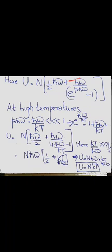This result is not in agreement with the equipartition theorem. According to the equipartition theorem, the mean energy per harmonic oscillator should equal kT. However, the quantum mechanical result contains additional terms beyond kT, making it clear that quantum mechanical oscillators do not obey the equipartition theorem.